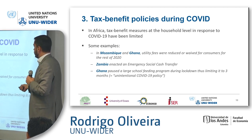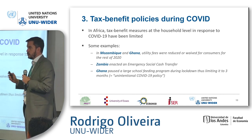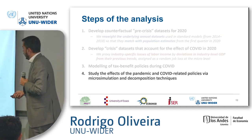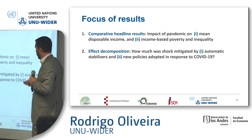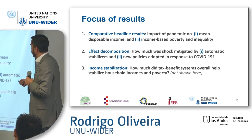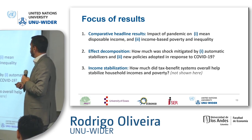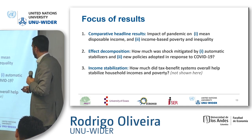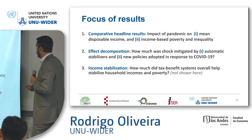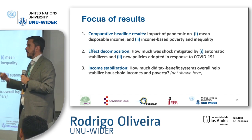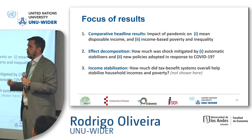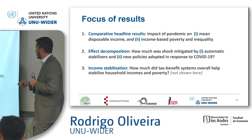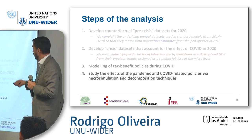We applied the method and compared headline results — the impacts of the pandemic on mean disposable income, income-based poverty, and inequality — then conducted decompositions showing how much the shock was mitigated by automatic stabilizers such as unemployment insurance for formal sector workers, and by new policies adopted because of COVID-19.